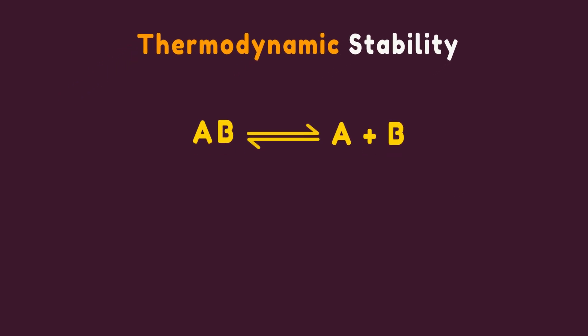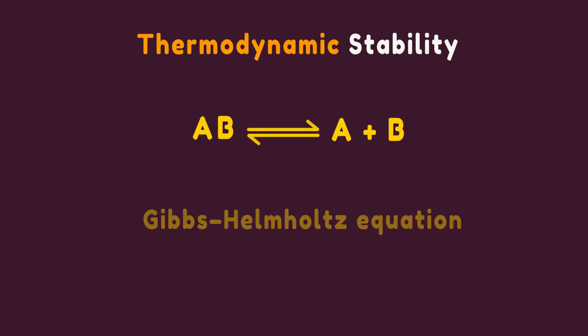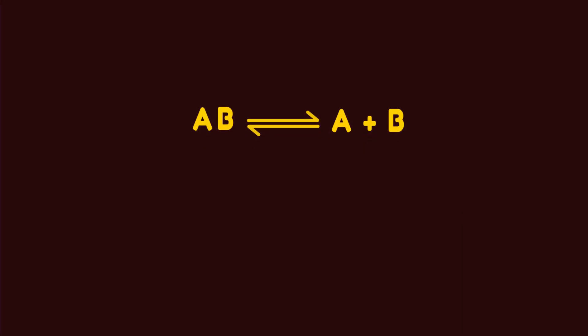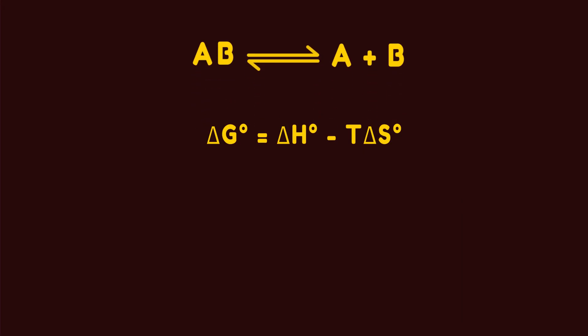Thermodynamic stability involves the position of a particular equilibrium. So we deal with the Gibbs-Helmholtz equation, which tells us that change in the Gibbs free energy between two different chemical states determines the position of the equilibrium.